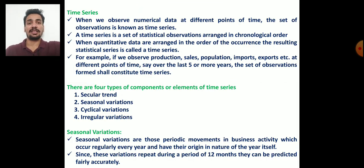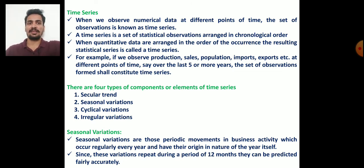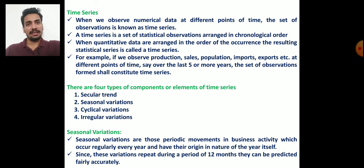First, time series: as we know, when we observe any numerical data at different points of time, that set of observations is known as a time series. Another definition is that a time series is a set of statistical observations arranged in chronological order, or when quantitative data are arranged in the order of occurrence, the resulting statistical series is called a time series.